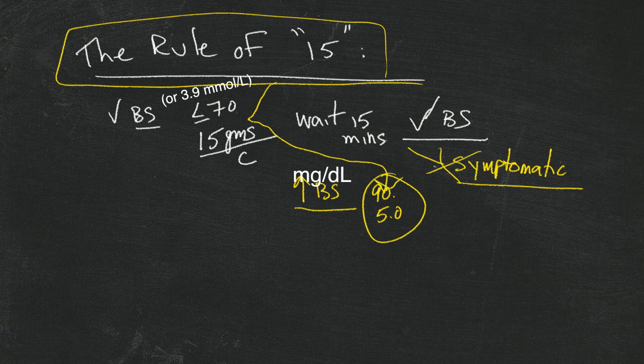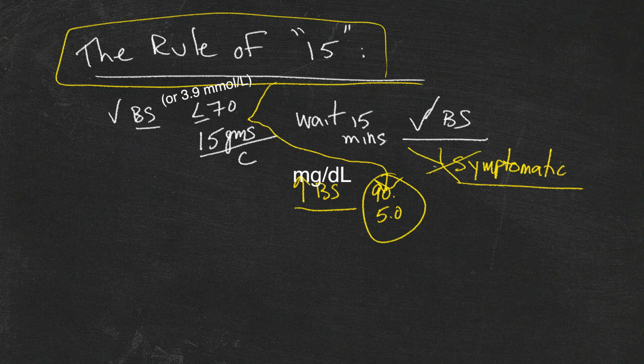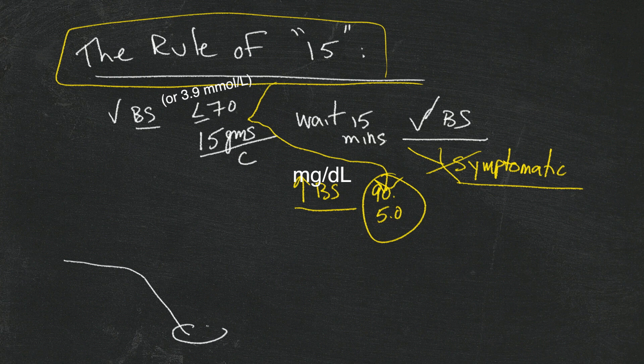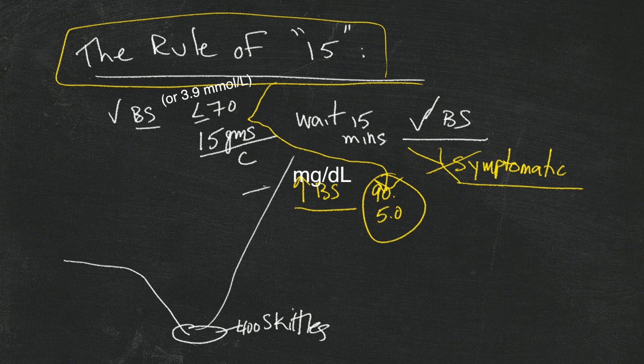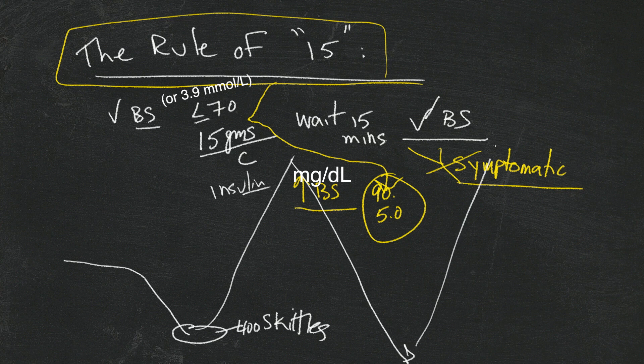That's key to managing blood sugars effectively. Because what you don't want to do is go really low, over-treat it with 400 Skittles because you're starving to death, then have your blood sugar go all the way up, have to take some insulin to bring it down, and go low again. You get my point.